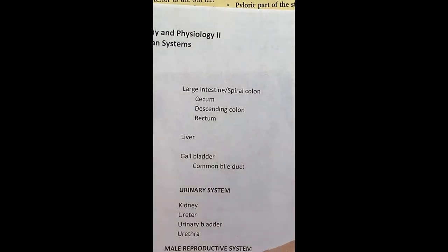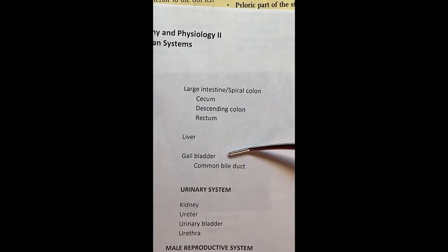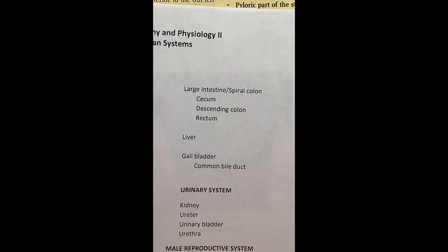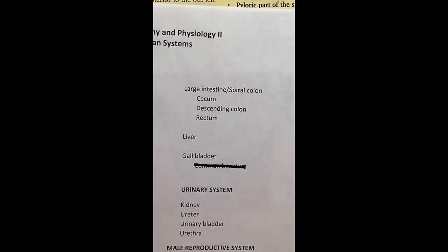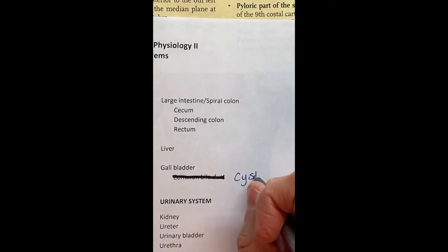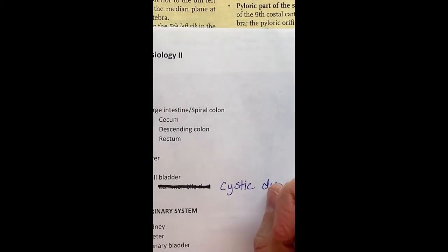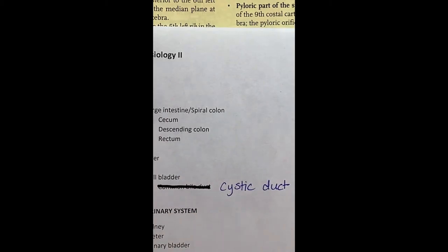We'll see the small intestine, the large intestine, the liver, and the gallbladder. Instead of the common bile duct, the term we'll need is the cystic duct. You can see the cystic duct coming off of the gallbladder, and that turns into the common bile duct, but we're not going to see the common bile duct if it hasn't been dissected out in the specimen.